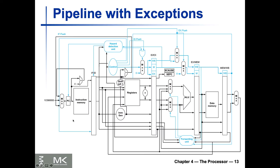To implement that on the pipeline, I've added a handler address as another input to the multiplexer. This is the address of the handler code — when an exception is found, the handler should start executing at this address. This supplies the new PC, because normally the adder was adding +4 each iteration. Now if an exception is caught, the handler feeds this address to the program counter to take over control of the next set of instructions in the pipeline.